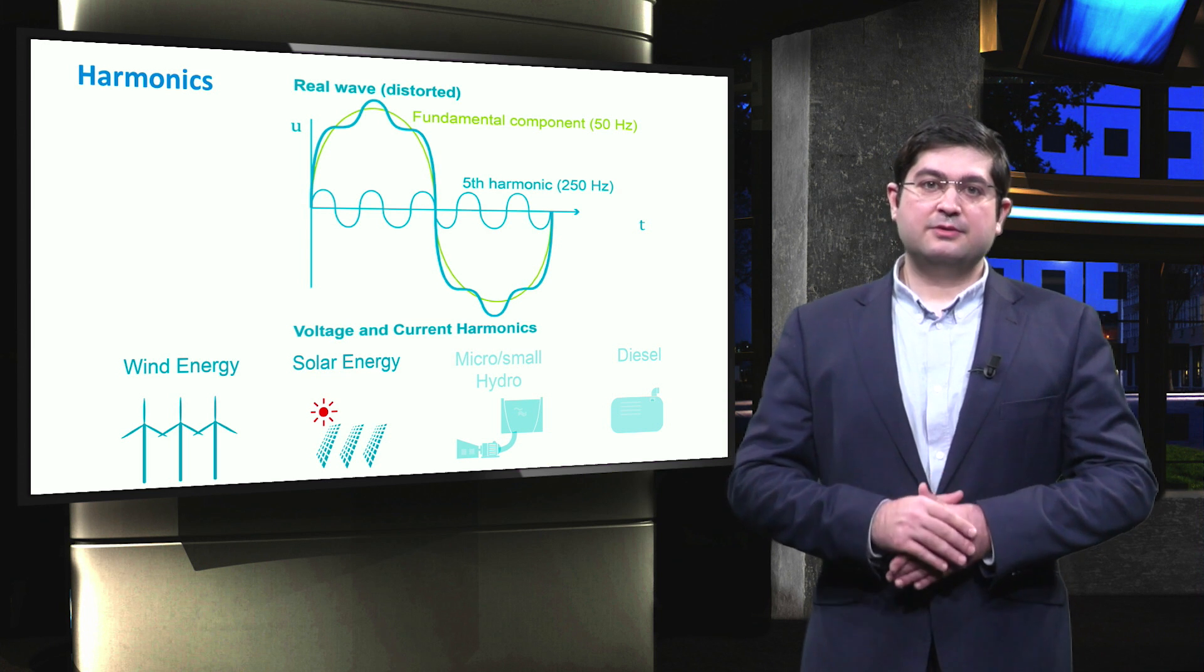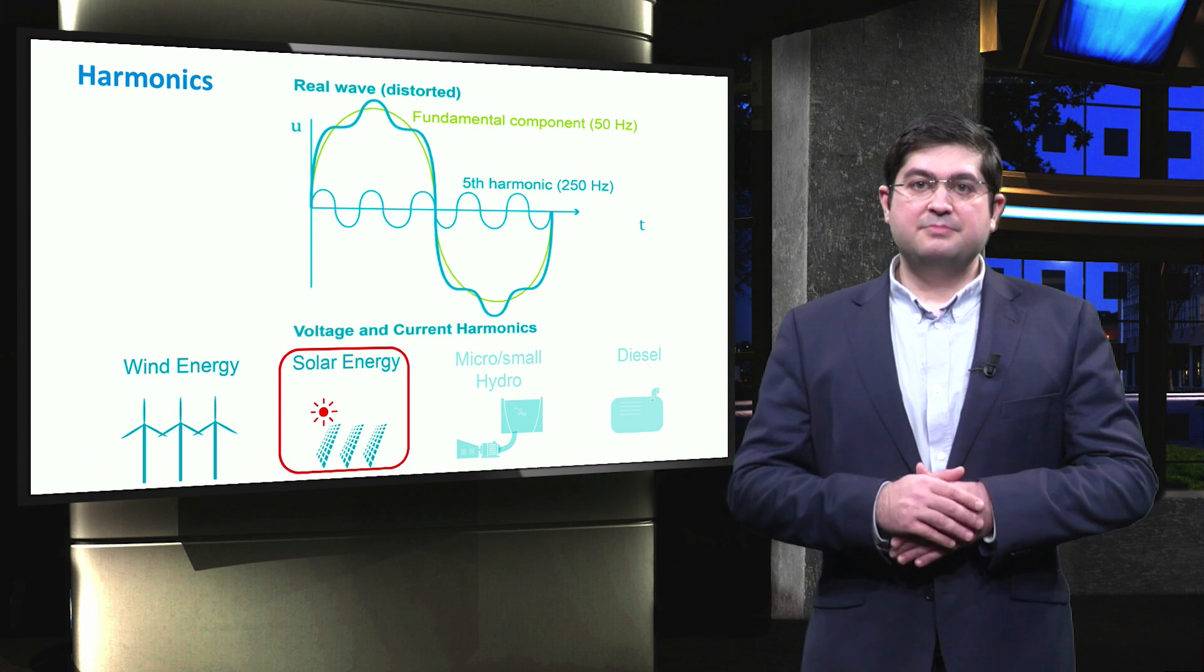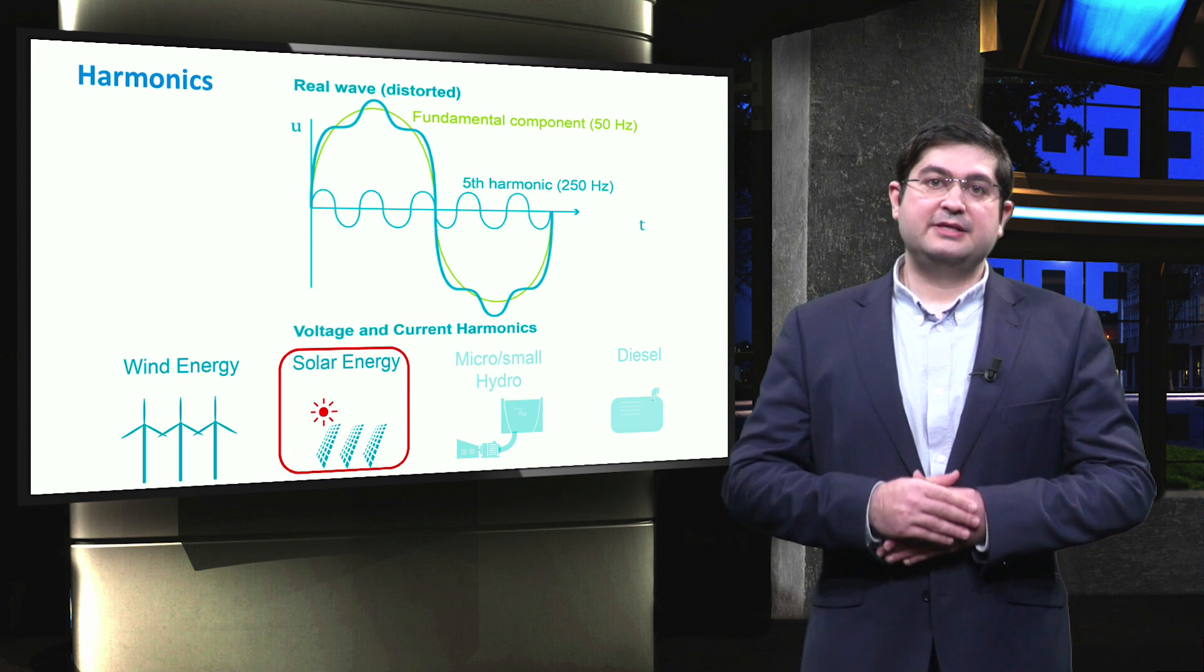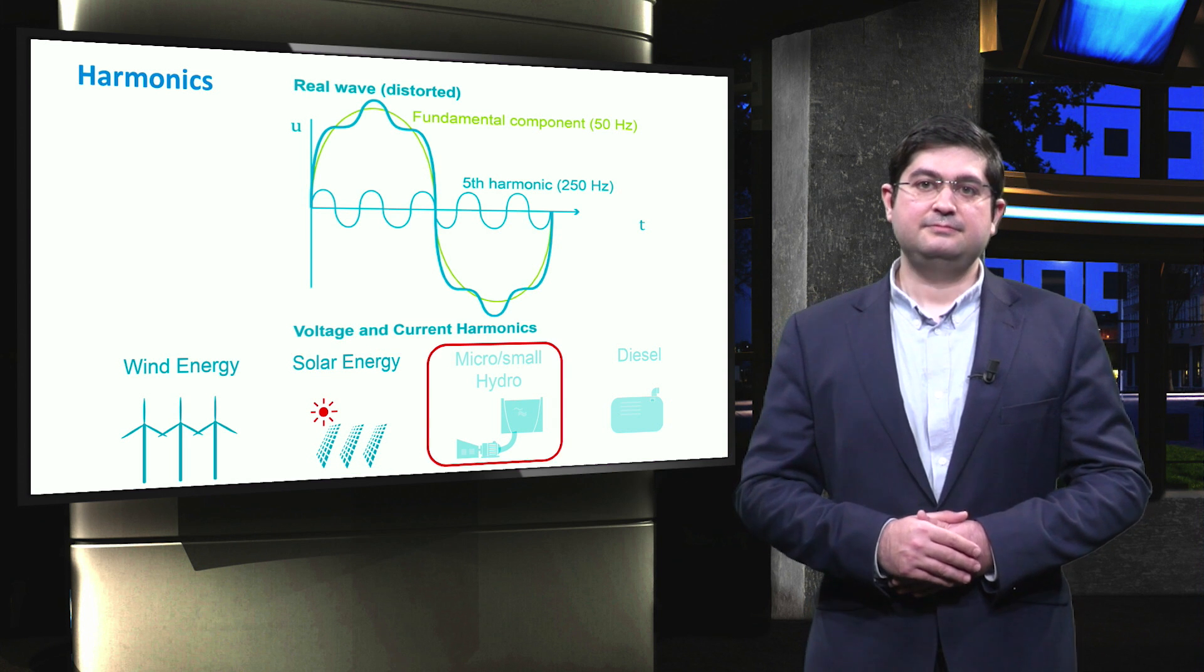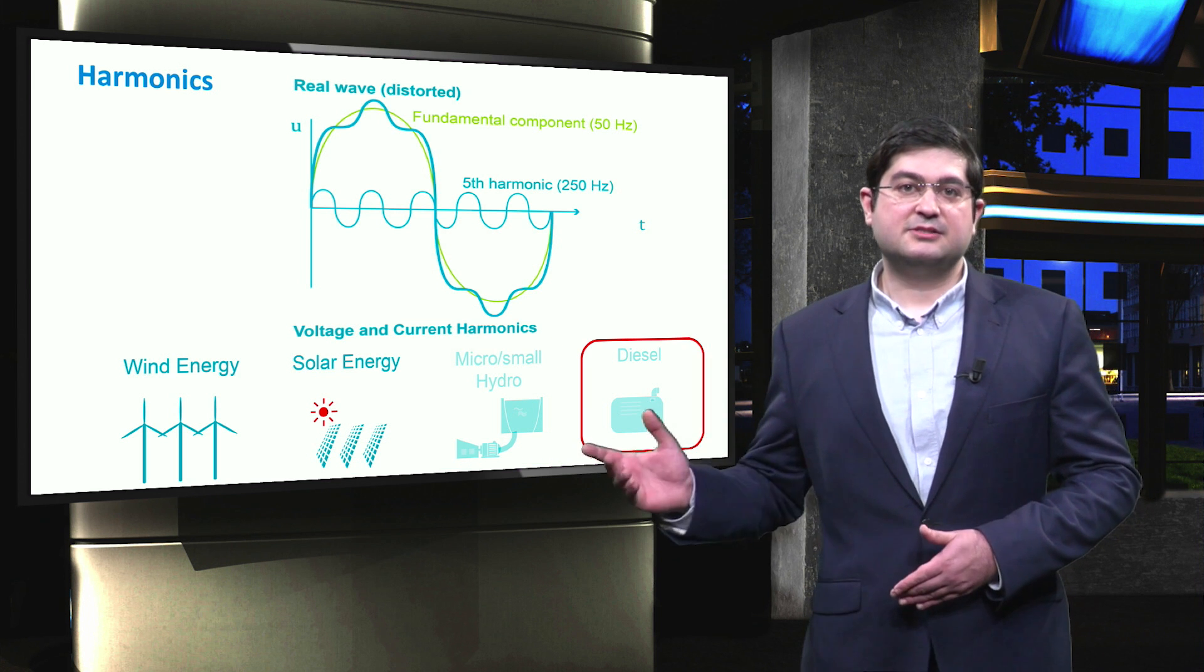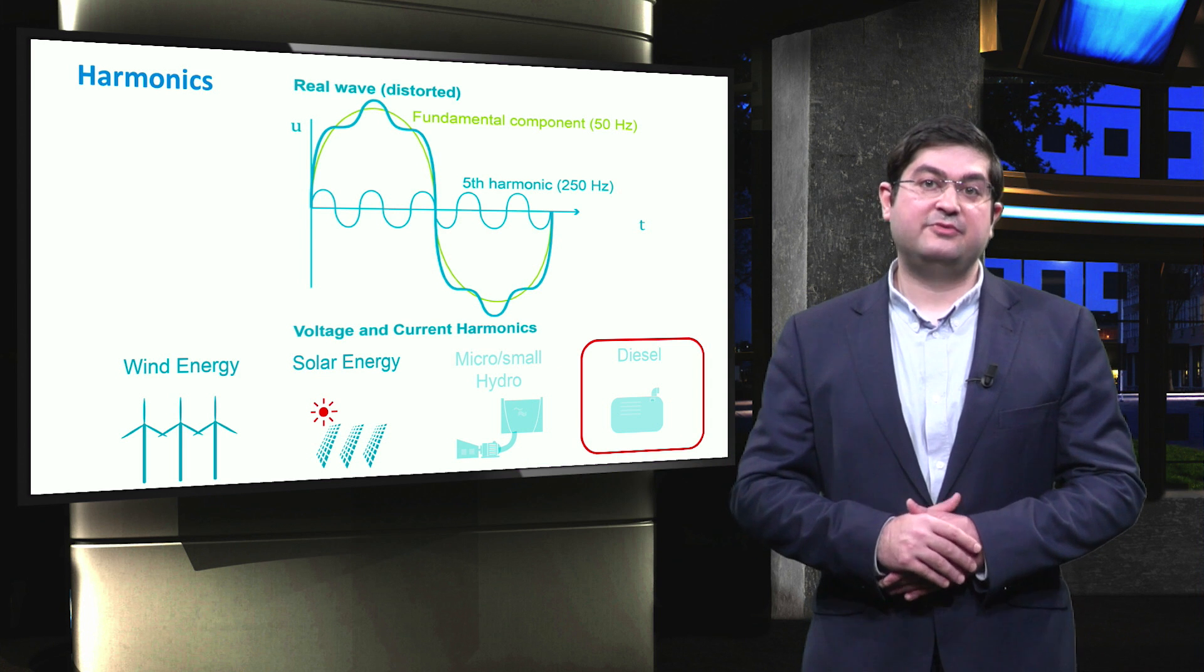As it is shown in the figure, wind turbines and PV units can potentially increase the levels of harmonics in microgrids. A small hydroturbine and diesel engine obviously does not generate harmonics because they have no electronic interface units.